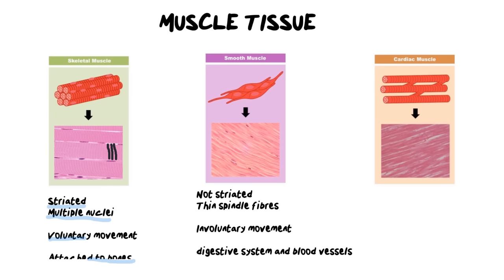When looking at smooth muscle, we're looking for muscle that is not striated — that is its defining characteristic. You need to look carefully because the individual fibers have no stripy appearance. What you're actually looking at are thin spindle-shaped fibers, meaning the cell is swollen in the middle and tapers off and gets thinner at the edges. Smooth muscle is responsible for involuntary movement — movements you don't have to think about, like blinking, coughing, or breathing. We find it in the digestive system and in blood vessels.